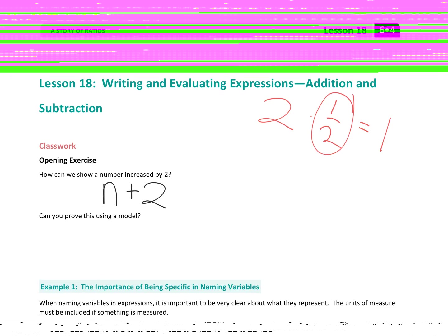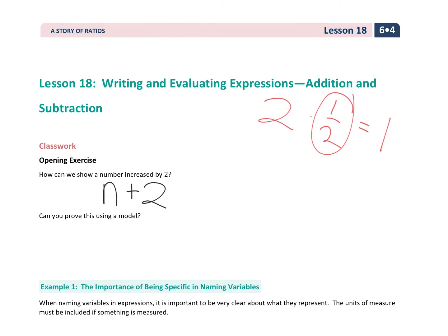So "increased" is actually an addition term, not a multiplication, because multiplication can make things increase or decrease. Can we prove this with a model? Yes — I could make a little model representing n and another piece representing two, and we're adding them together. So easy enough, a little bit of review.